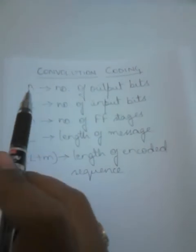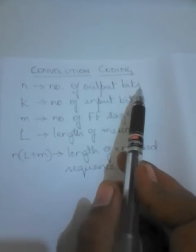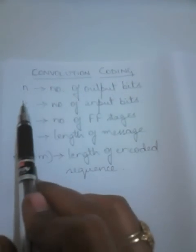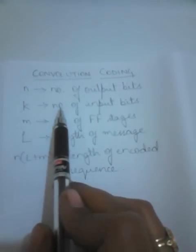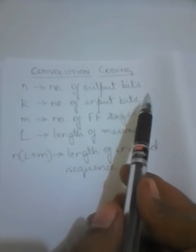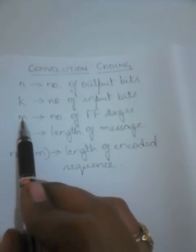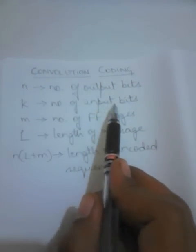To summarize the terminologies: n represents the number of output bits at any particular time; k represents the number of input bits at any particular time entering the encoder circuit; m represents the number of flip-flop stages; l represents the length of the message; and n into (l plus m) represents the length of the encoded sequence.